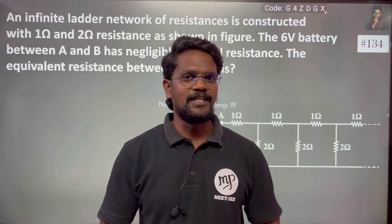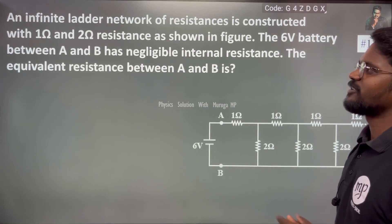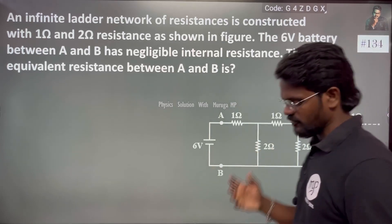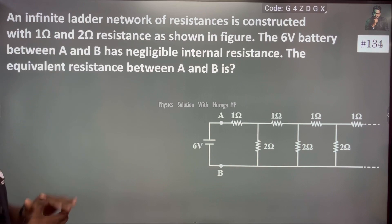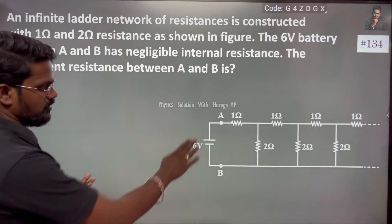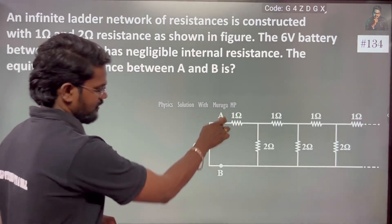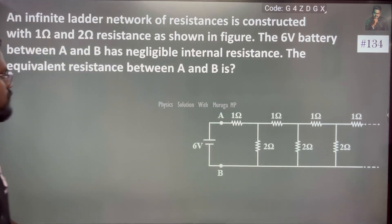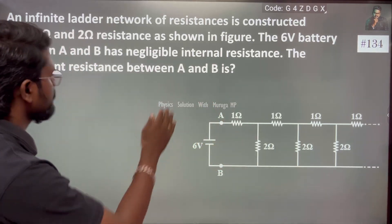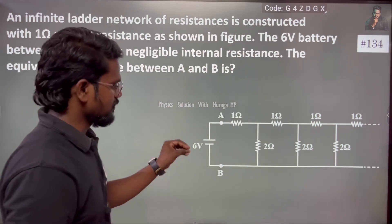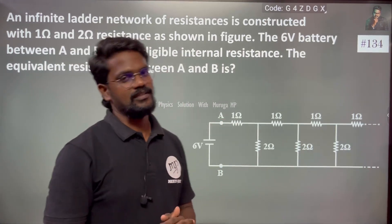Hi everyone. Problem number 134: an infinite ladder network of resistance. An infinite number of resistors are constructed with one and two ohm resistors according to the circuit shown in the figure. A six-volt battery is connected between A and B. The terminal has negligible internal resistance. We need to find the equivalent resistance between A and B.